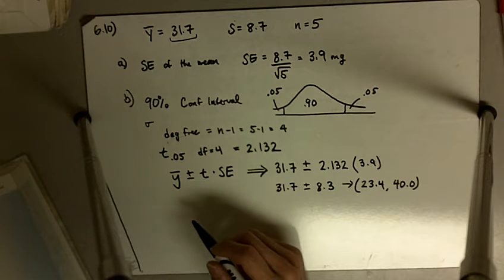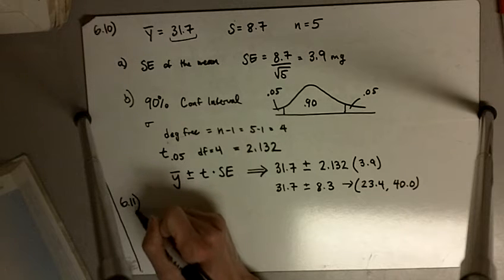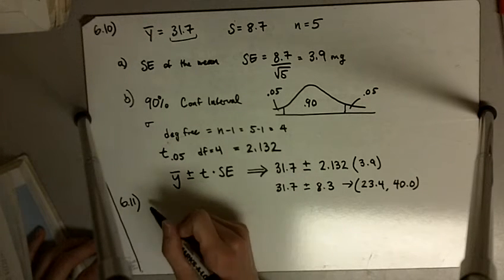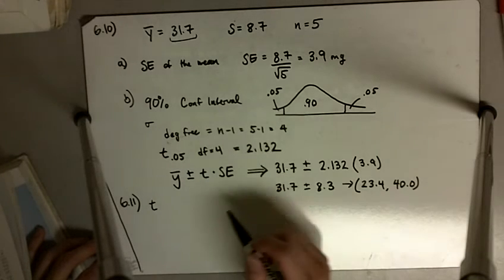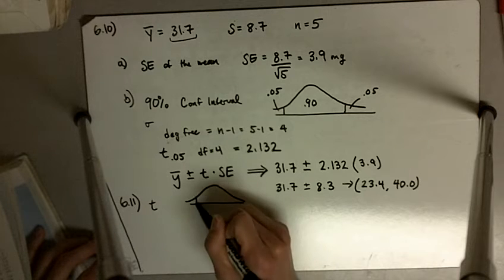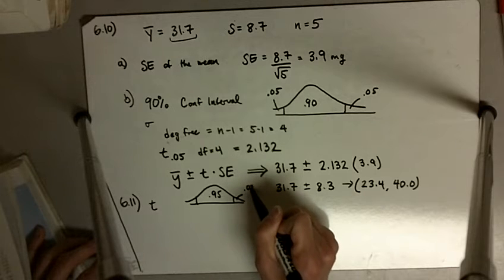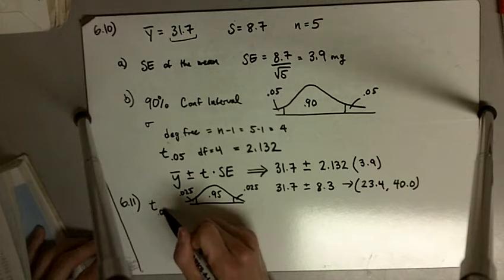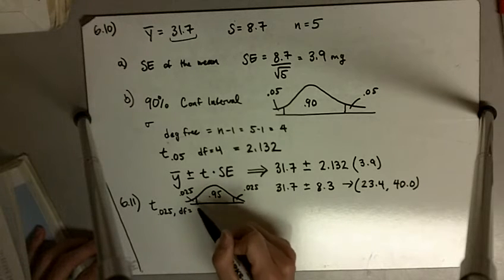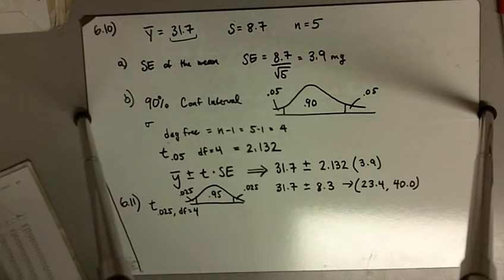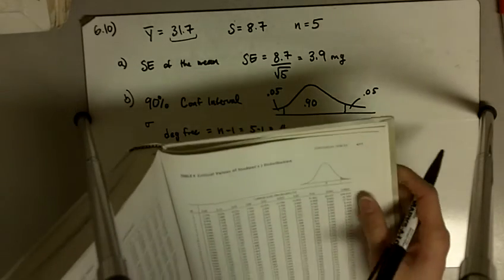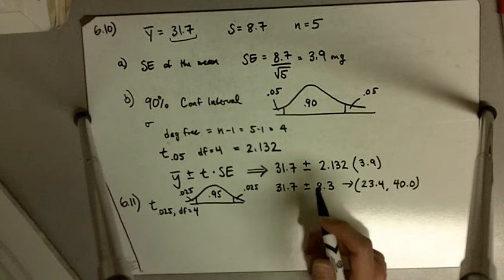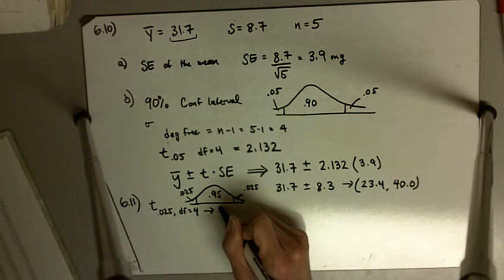Now for question 6.11, construct a 95% confidence interval for the population mean. In this case, we need a different t-value. We're looking for 95% in the middle, which means in each tail we have 0.025. We look up t with 0.025 in the tail and degrees of freedom still equal to 4. Looking it up in the back of the book, we get 2.776.